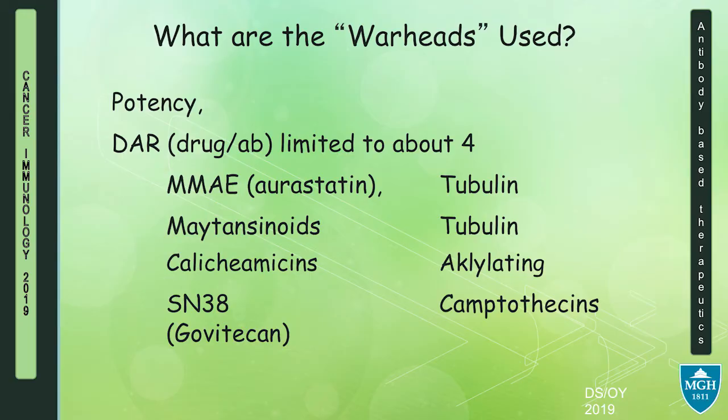What about the toxin or warhead itself? These are some of the common classes used in approved ADCs and advanced clinical testing. We have the auristatin classes, which prevent tubulin polymerization — like our classic microtubule inhibitors, with paclitaxel being the one most are aware of. Maytansinoids are also very common tubulin class inhibitors. Calicheamicins are DNA alkylating agents — they bind in the minor groove of DNA and induce double-stranded DNA breaks. Govotecan is a camptothecin and a topoisomerase 1 inhibitor, very similar to irinotecan, and not surprisingly one of its side effects is diarrhea. There is also the pyrrolobenzodiazepine class, which also binds to the minor groove of DNA and cross-links DNA.